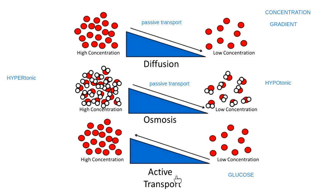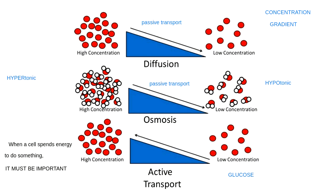When we do active transport, does it require energy? Active transport does require energy. Here's something to write down, underline, and highlight: when a cell spends energy to do something, it must be important. You can see it at the bottom of the slide. When a cell spends energy to do something, that something must be important — it's got to be worth it for the cell to be willing to spend its energy to make this happen.